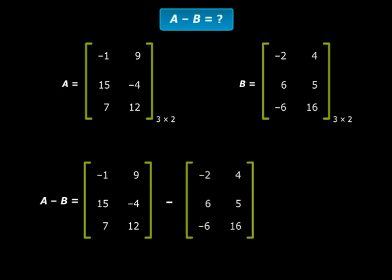Now the matrix A minus B, the order of this matrix will be the same as that of matrices A and B. So let's say that A minus B is of this form.